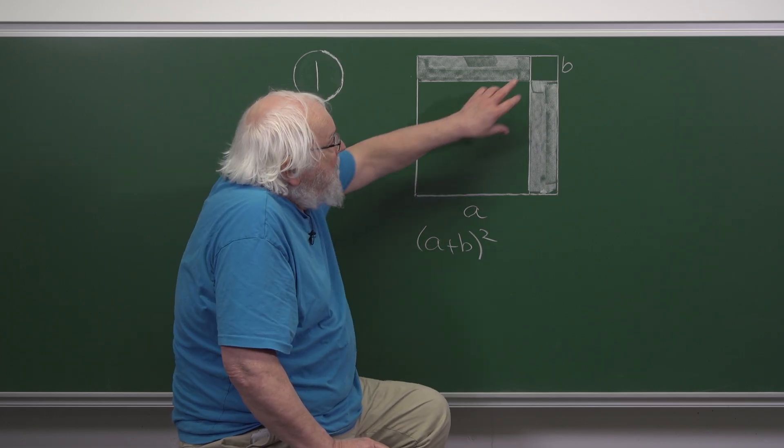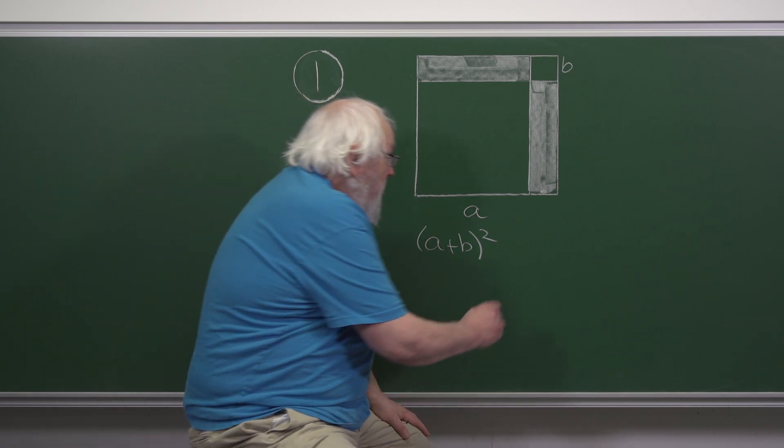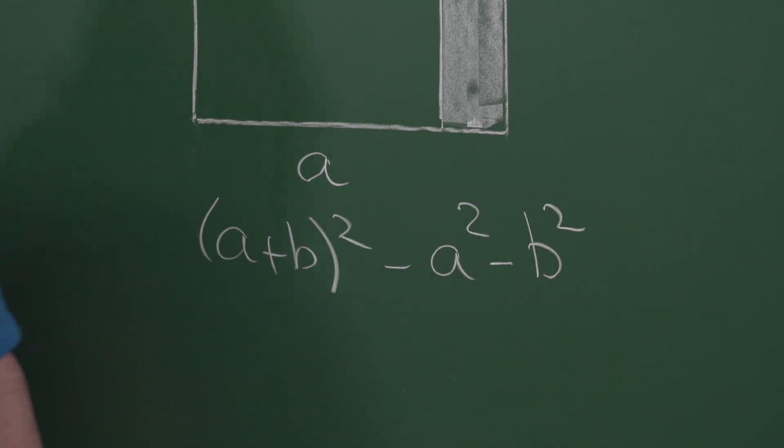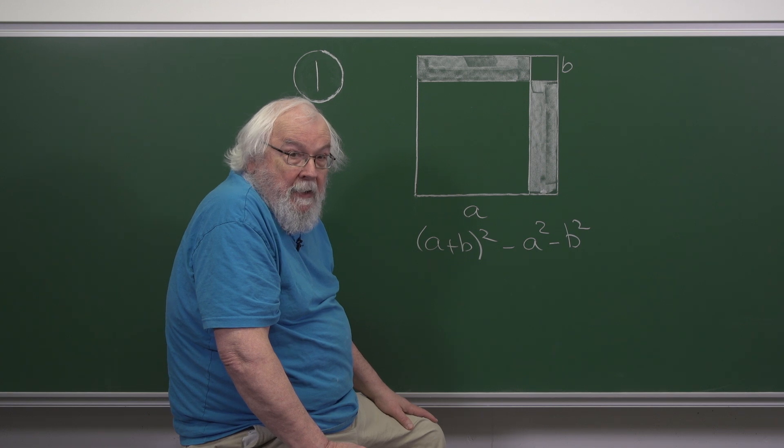If we subtract away the areas of the two small squares, that's the shaded area. You can work out A plus B all squared.